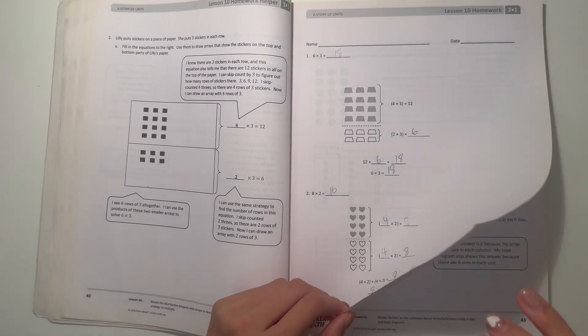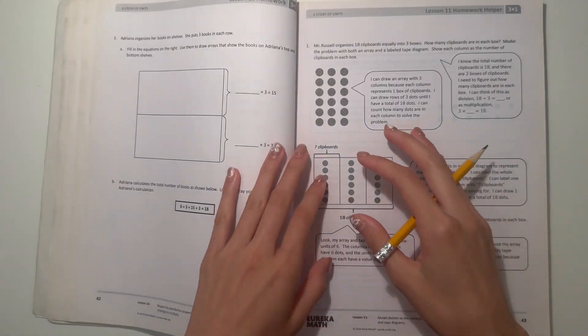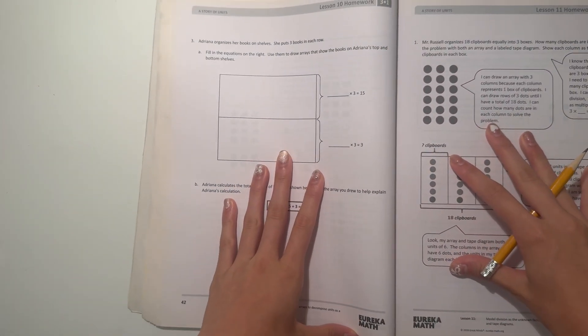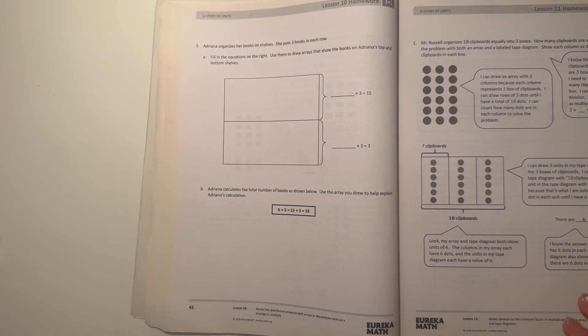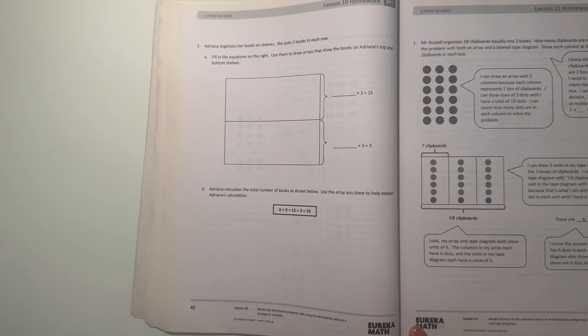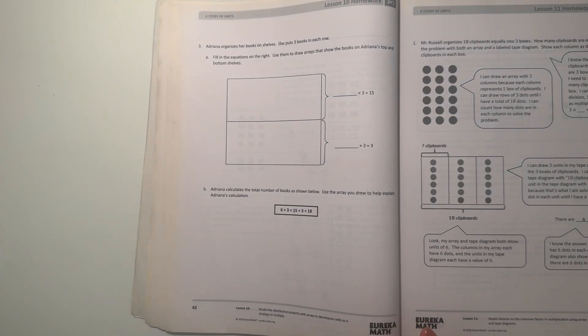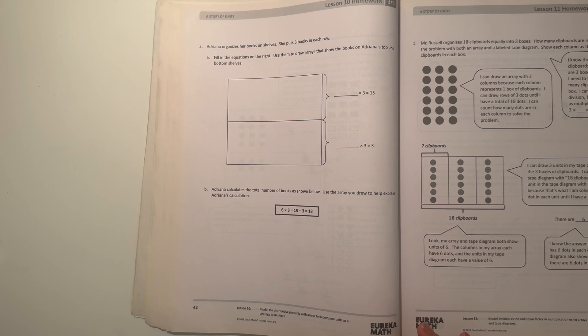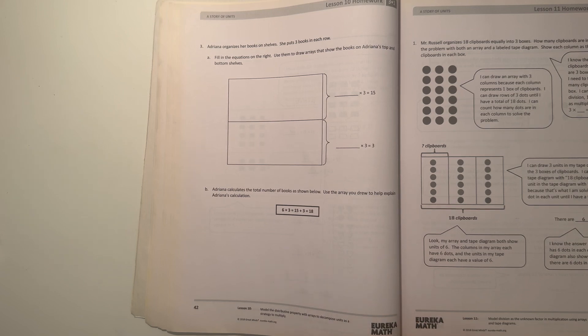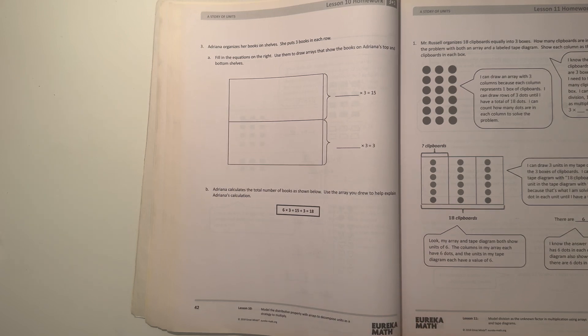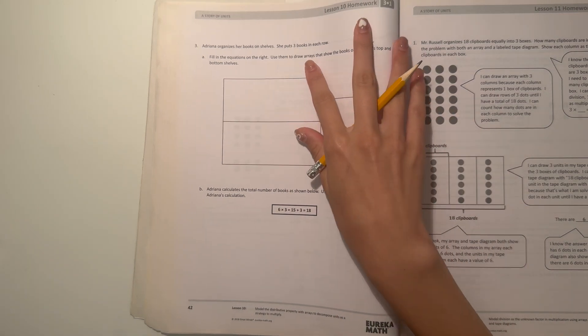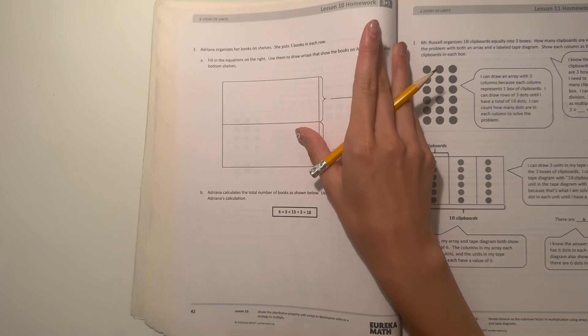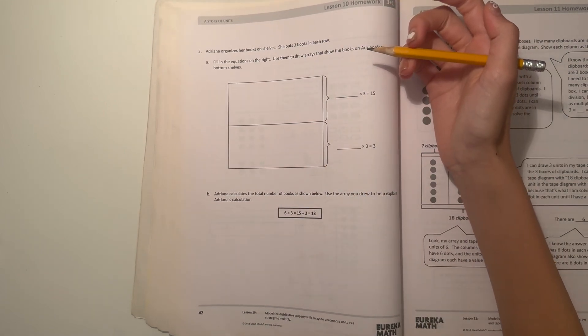All right, next page. Here we have number three. Adriana organizes her books on shelves. She puts three books in each row. Fill in the equations on the right. Use them to draw arrays that show the books on Adriana's top and bottom shelves. So three books in each row. On the right we have blank times three is fifteen.